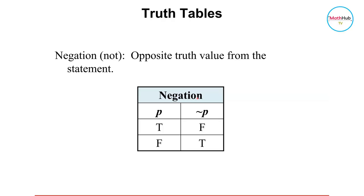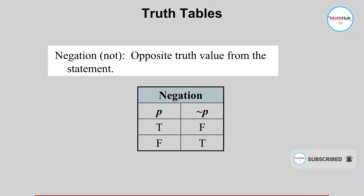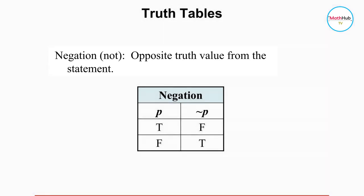Let's begin with negation. If we have a statement P, when you negate it, this will be the symbol. When you say negation, that means 'not' — the opposite truth value from the statement. For instance, if we assign the truth value for P to be true, then its negation will be false. It's just the opposite of the truth value of the statement. If P is false, its negation is true.